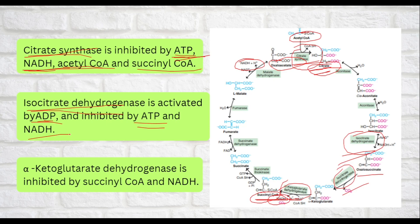The last enzyme is alpha-ketoglutarate dehydrogenase. This enzyme catalyzes the conversion of alpha-ketoglutarate to succinyl-CoA. This enzyme is structurally and functionally similar to the pyruvate dehydrogenase complex, consisting of three sub-enzymes and five co-enzymes, as detailed in the pyruvate dehydrogenase complex video.